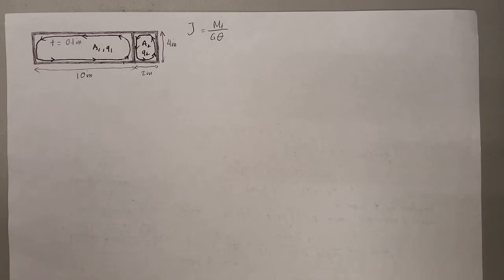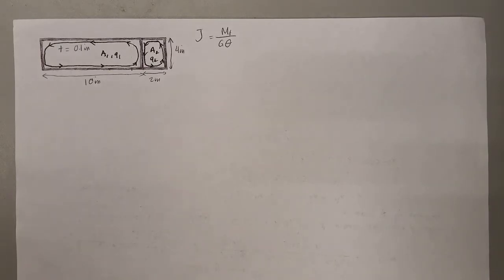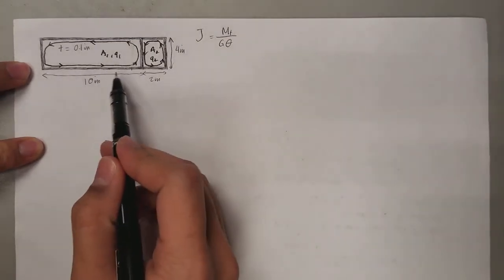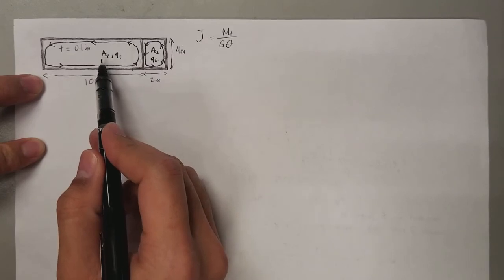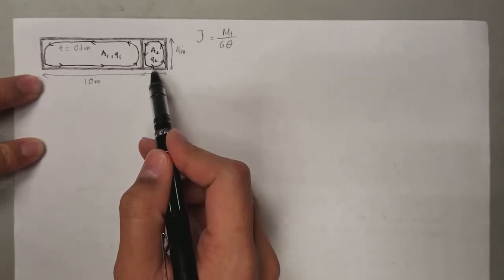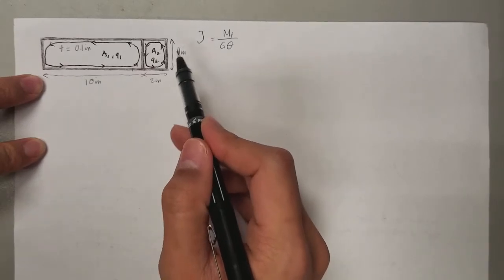Hi class! In order to prepare you for the coming torsion exam, today I will be showing you how to calculate the Sainte-Venant constant, or the torsional constant, of a multi-cell beam. Suppose you are given a beam with the following dimensions, made up of two cells — the first cell with shear flow Q1 and the second cell with shear flow Q2 — and you are asked to determine the torsional constant J of the whole beam.